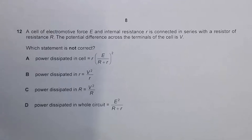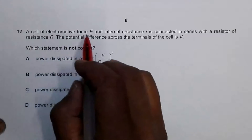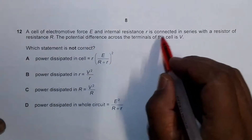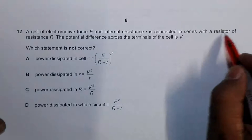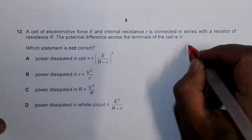Hello folks, this is a question outside the Cambridge Assessment A-level syllabus, but it's still important and could be useful for you. It says that a cell of electromotive force E and internal resistance small r is connected in series with a resistor of resistance R.